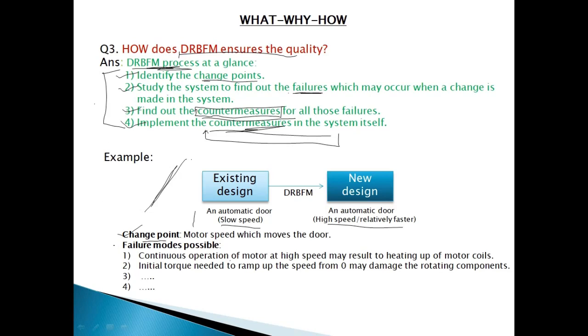The second step is to identify the failure modes. Now for example, if the continuous operation of motor at high speed is done for a long time, it may result in heating up of the motor coils. Also, the second failure mode that seems to be possible is the failure of rotating components that we use because there would be increase in the initial torque needed to ramp up the speed from zero to the final faster speed. Until now this torque would have been less, but now the torque would increase. So we will have to check that whether the rotating components are able to tolerate this increased torque. So we can see that even a small design change can lead to big failures like component failures or component heating up and other things.